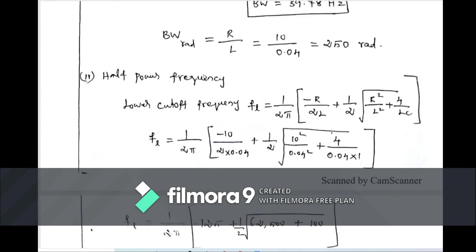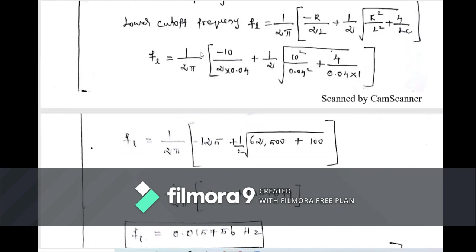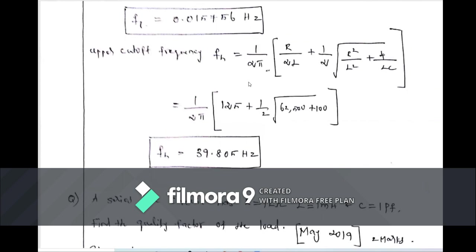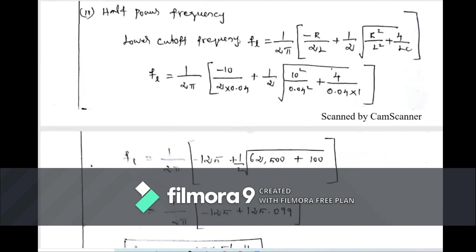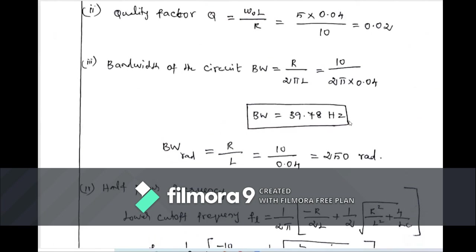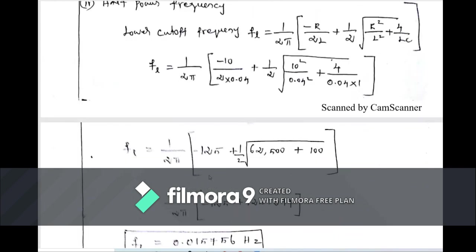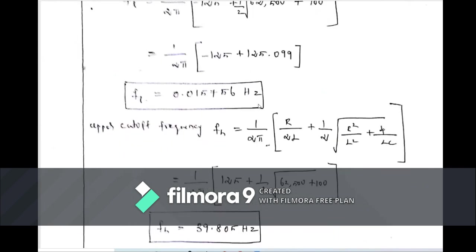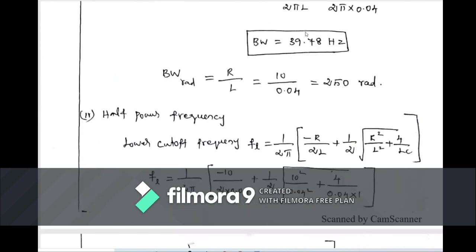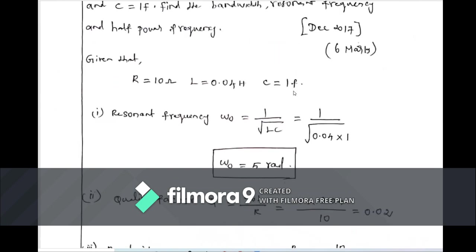The bandwidth equals the difference between the upper and lower cutoff frequencies: 39.805 − 0.0157 = 39.78 Hz — the same answer as before. This is another method to find the bandwidth by calculating both cutoff frequencies and subtracting.